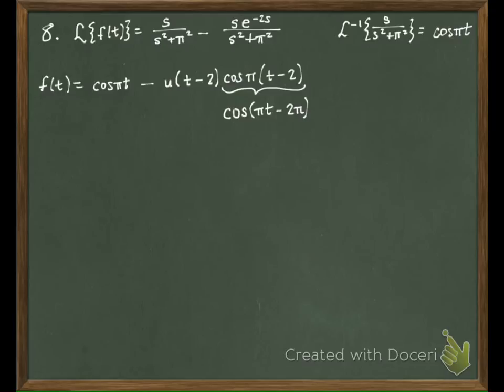No, in parentheses, it was t minus 2. The shift was at 2. The reason I put it together is because now I can say this is the same thing as cosine pi t cosine 2 pi minus sine pi t sine 2 pi.